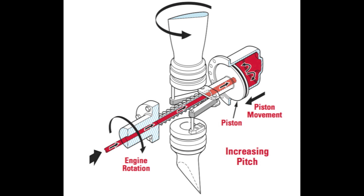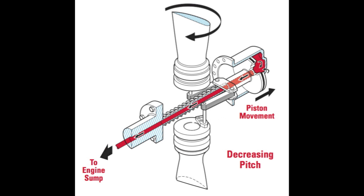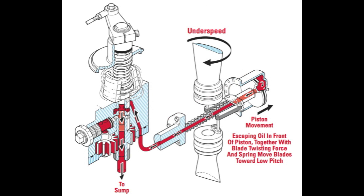To increase the pitch of the propeller, oil is pumped into the dome, creating more pressure, which then moves the propeller. Now to decrease the pitch, oil is simply drained. Additionally, there are two forces which move the piston towards the front of the dome: spring resistance and the centrifugal twisting moment of the propeller.